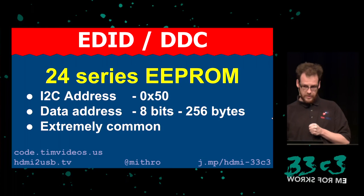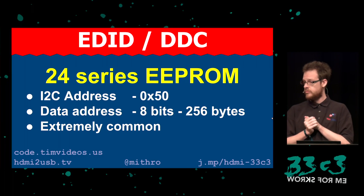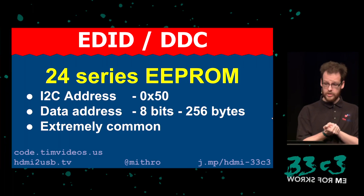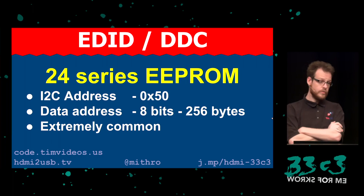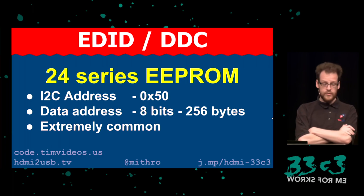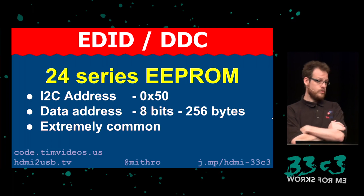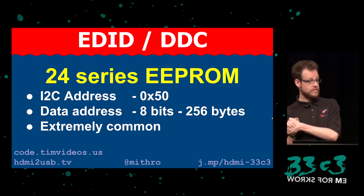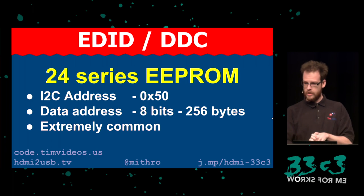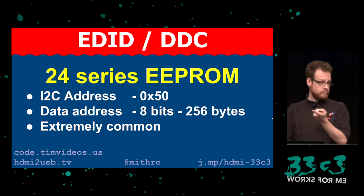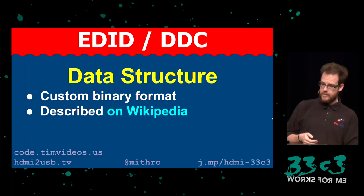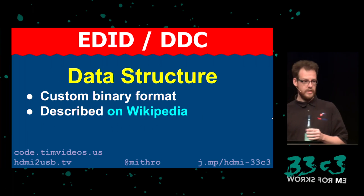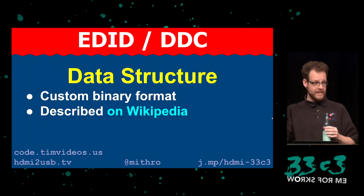It uses I2C — a low-speed protocol with a clock frequency of 100 or 400 kHz typically. Technically it's not exactly I2C because it only officially supports 100 kHz, but practically everything on the planet can run at 400 kHz too. The EPROM is a series-24 EPROM. It uses I2C address 0x50, has 8-bit addressing — so 256 bytes of memory. The data structure is a custom binary format. Wikipedia has a very good description, so I won't go into details.